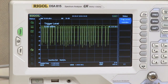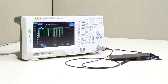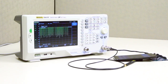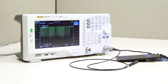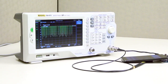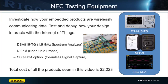The DSA815TG is a great spectrum analyzer for testing NFC, remote control toys, and key fobs. The TG was not necessary for any of the testing seen in this video, but it's a great feature to have in the future for testing the passive characteristics of an antenna or using the tracking generator feature. All of the Regal products seen here come to a total of just under $2,300. If you have any questions regarding these products or similar ones, please contact us at Regal. Thank you.